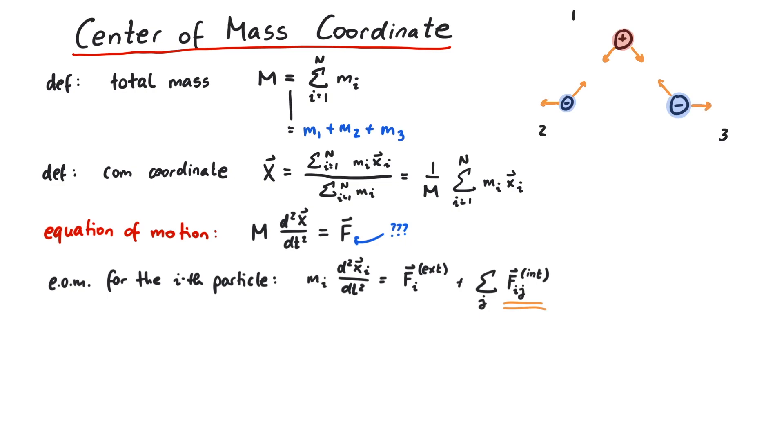The notation here is such that F13 denotes the force that is acting on particle 1 and was caused by particle 3. It is important to realize that because of Newton's third law, Fij is equal to minus Fji. That's why, for instance, F23 and F32 point in exactly opposite directions but have the same magnitude.